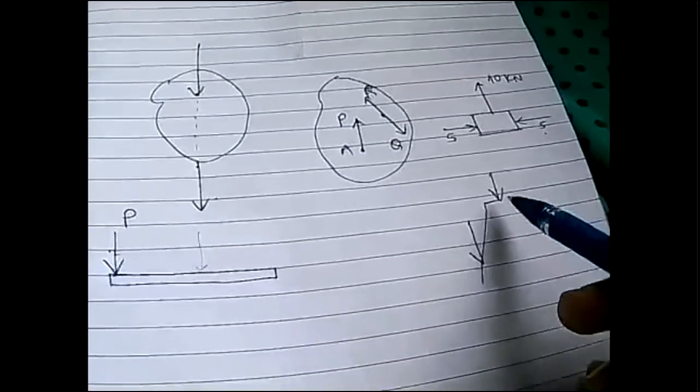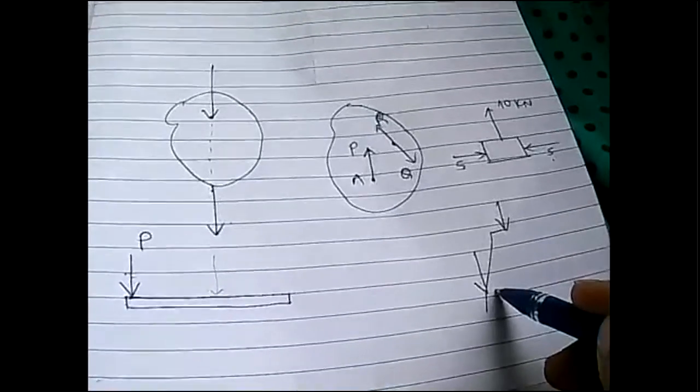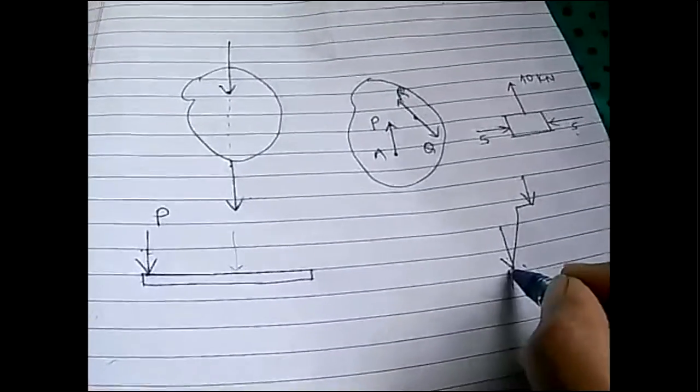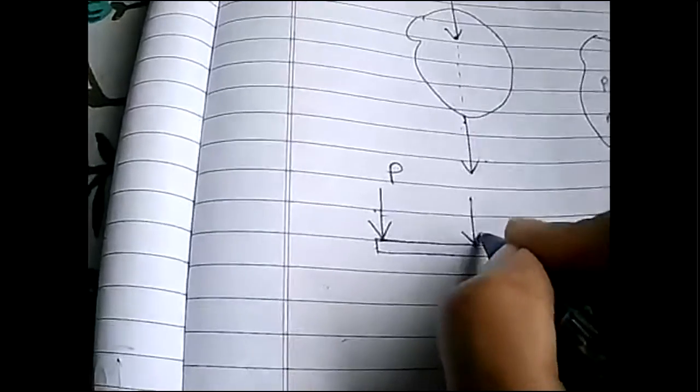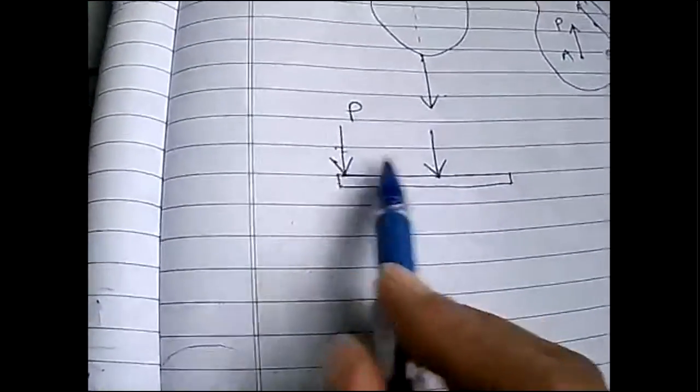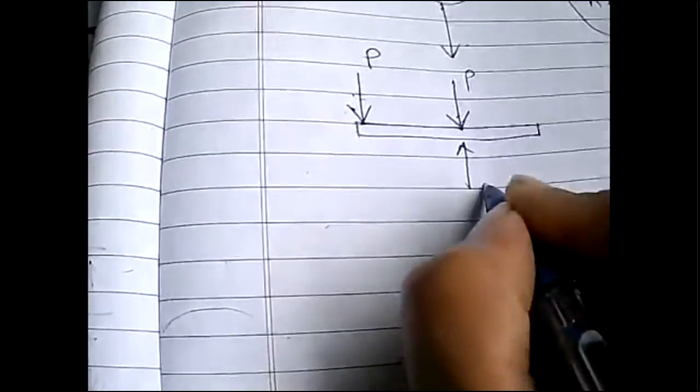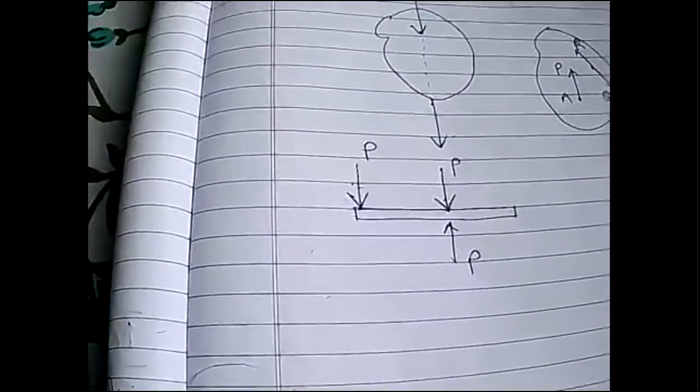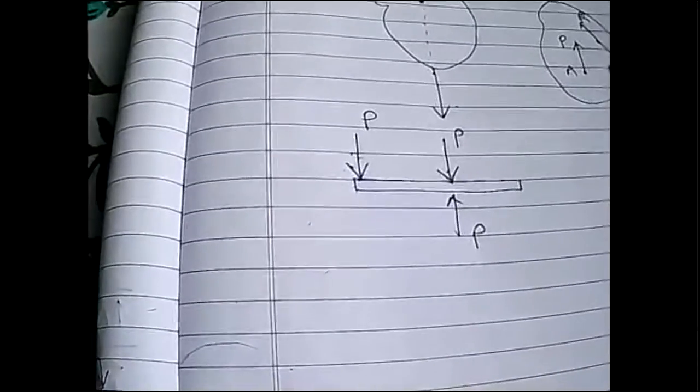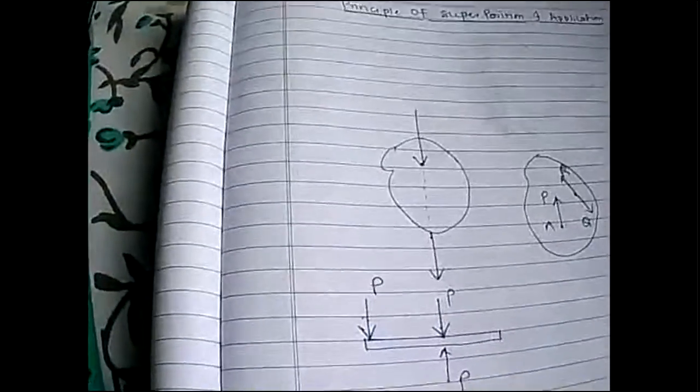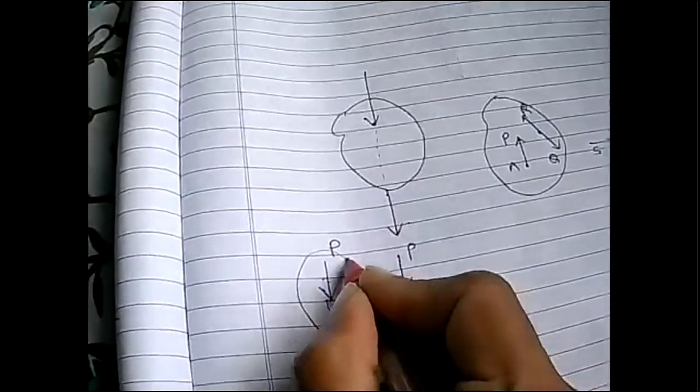But let me tell you, I am changing the line of action. So a complementary effect will be there on this body. What you are supposed to do is shift that load wherever you want. It should be of same direction. I will add one load and subtract another load. So ultimately, it is nullifying each other and balancing.